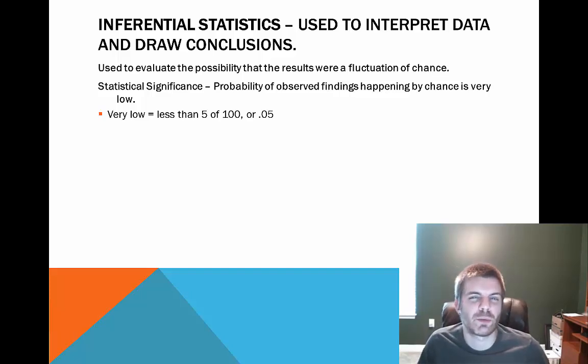And then another part of statistics that we have is the inferential statistics. And these are used to interpret data and draw conclusions. One main thing that we are concerned with is looking at something called statistical significance. Basically, if something is labeled statistically significant, then the researchers have basically came to the conclusion that it probably wasn't likely that the results happened by chance. Or if it did, it was very low. In this case, less than .05.